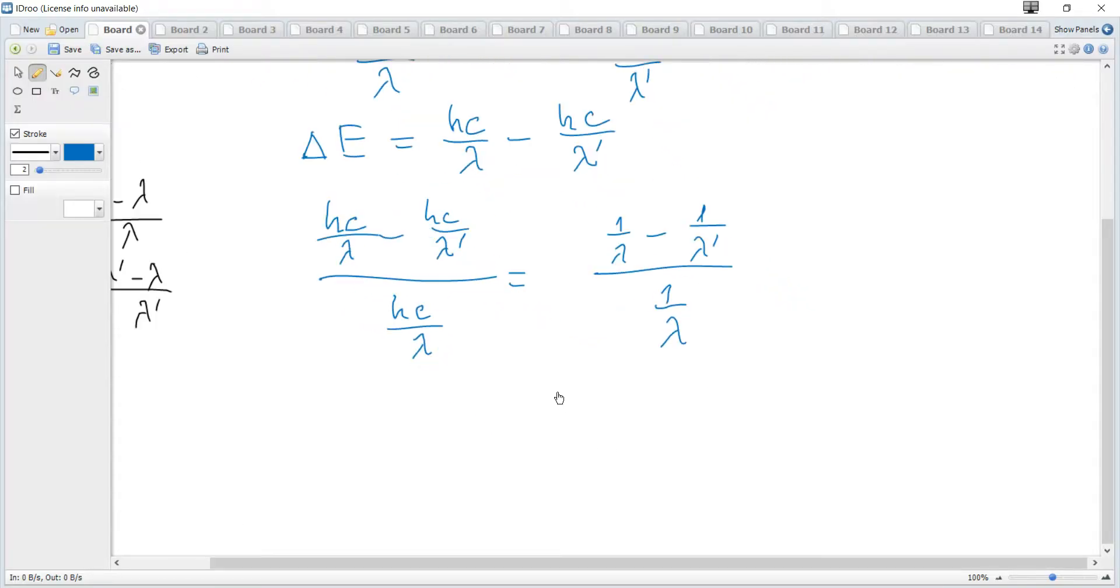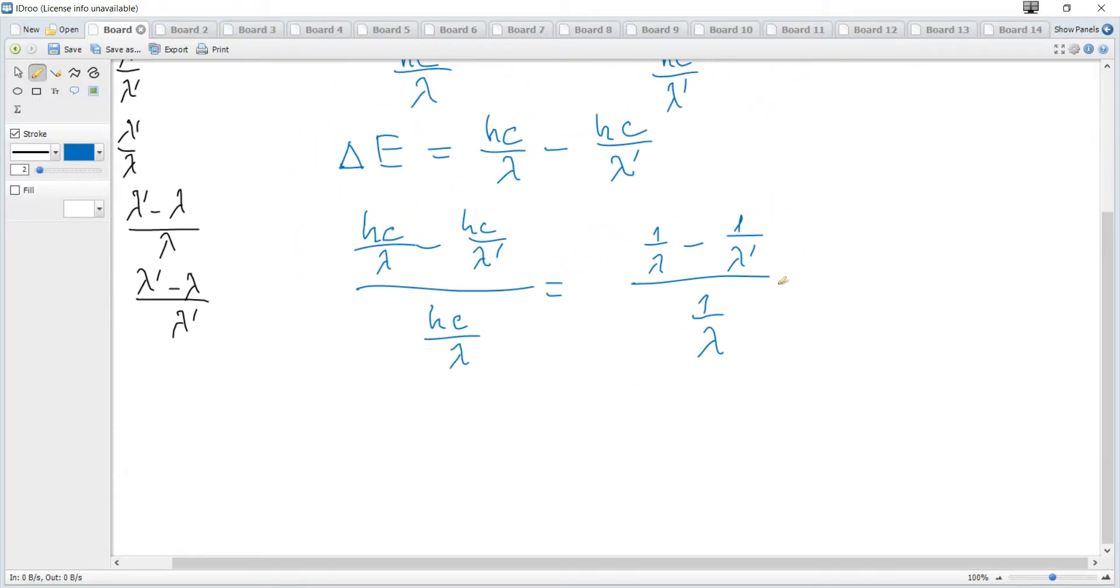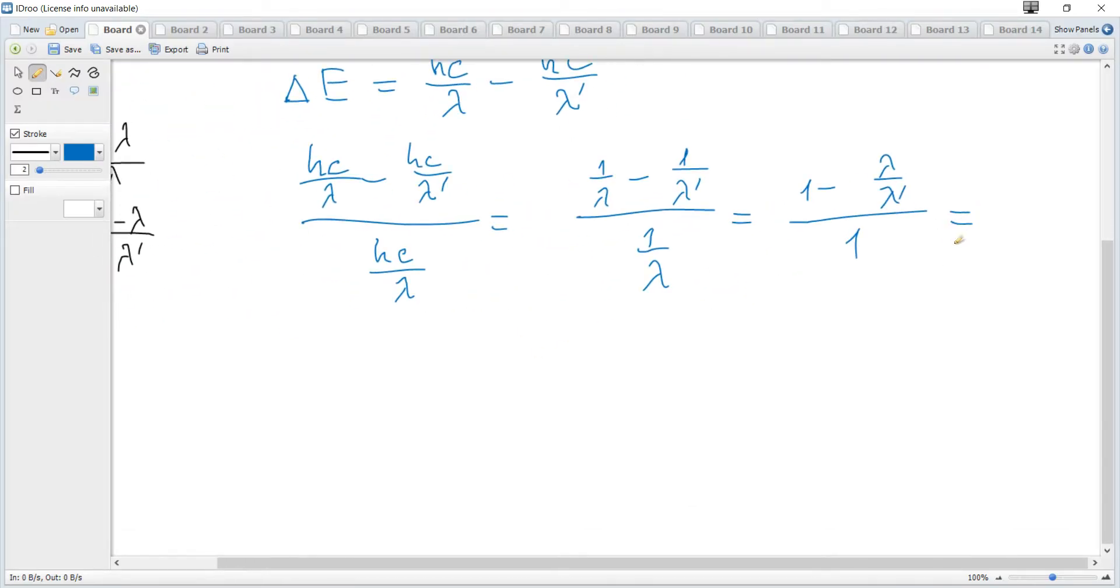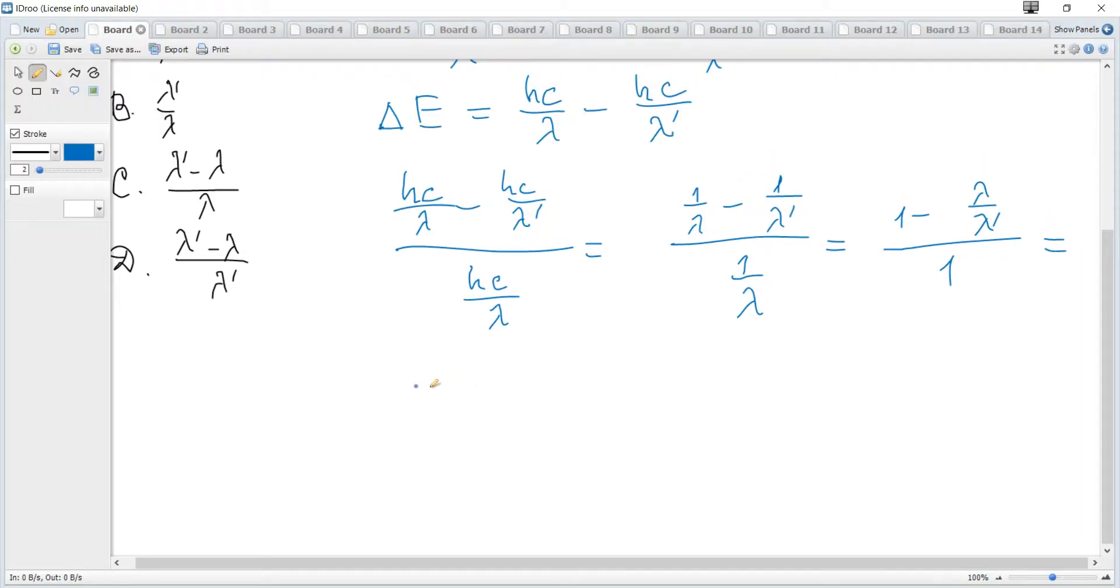Let's multiply each term by lambda to get 1 minus lambda over lambda prime over 1. Then let's multiply by lambda prime. We multiply each term in the numerator and in the denominator by lambda prime to get lambda prime minus lambda divided by lambda prime.